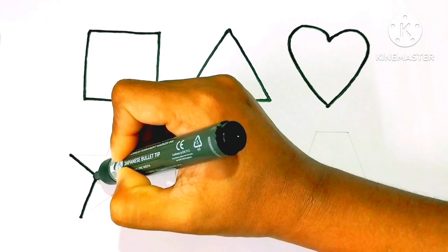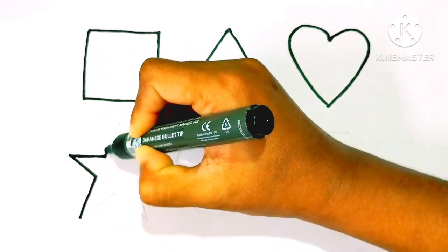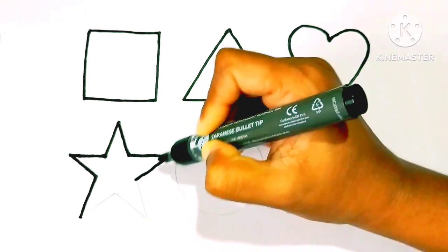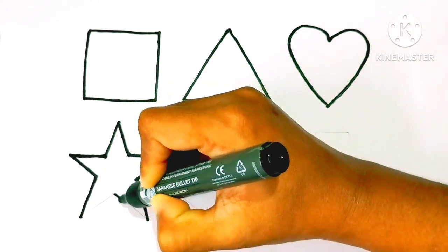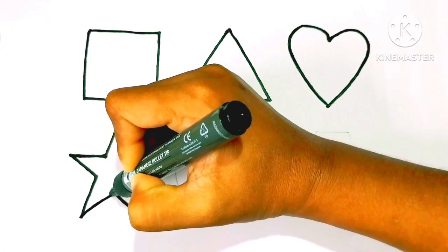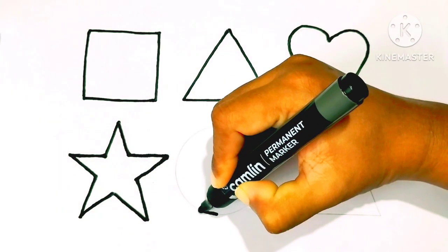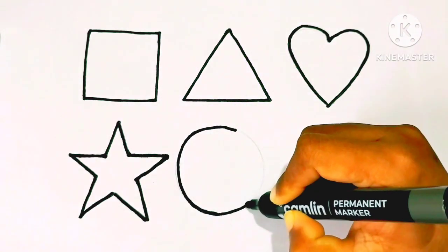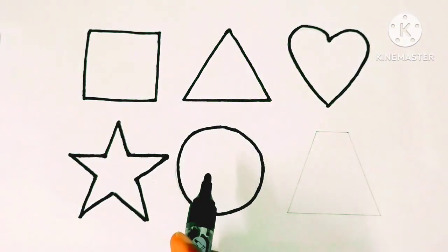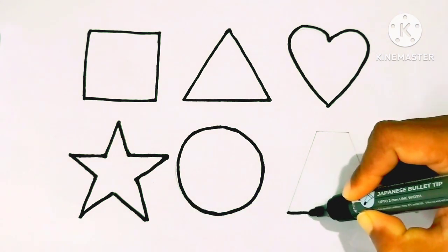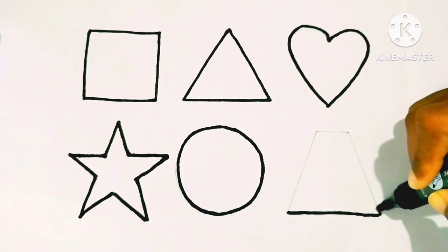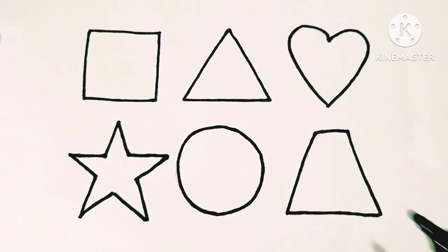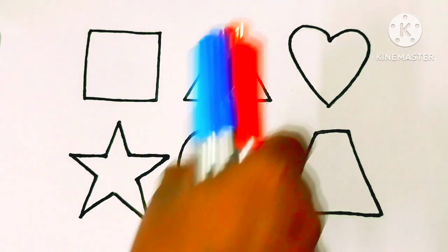H-I-J-K-L-M-N-O-P, Q-R-S-T-U-V, W-X-Y-Z. Now I know my ABCs. Star. A-B-C-D-E. Circle. H-I-J-K-L-M-N-O-P, Q-R-S-T-U-V, W-X-Y-Z. Colors name.